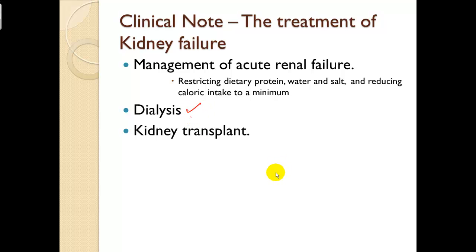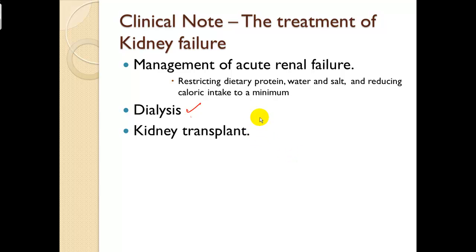Treatment of kidney failure: management of acute renal failure includes restricting dietary proteins, byproducts of protein, water, and salt, and reducing caloric intake. Dialysis can be performed via peritoneal dialysis — filling the abdominal cavity with dialysate and using the peritoneal cavity as a semi-permeable membrane — or hemodialysis, where the patient goes in three times a week for artificial dialysis. The most complete treatment for kidney failure is a kidney transplant.